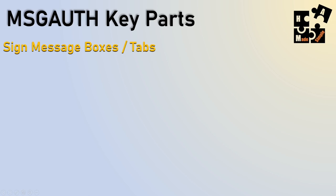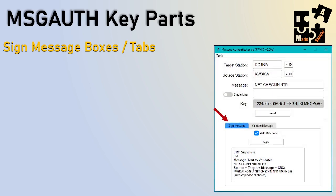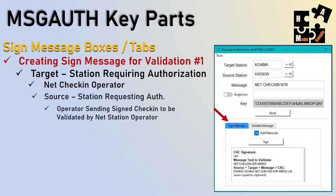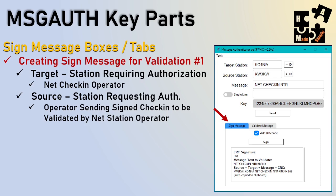Let's go over two examples on how this can be used. First, let's say we have a weekly net check-in and everyone's required to use this tool. I am KW3KW, doing the net check-in with nothing to report, and the net operator is Gunny KO4BIA. I send it off to him, he validates it, and since we're on the same keys, it will show that MJ is really here and checked in with nothing to report. It's a great way to not only authenticate but to check in.